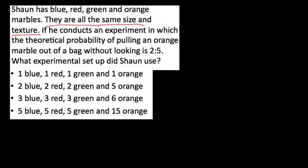If he conducts an experiment in which the theoretical probability of pulling an orange marble out of a bag without looking is 2 to 5, what experimental setup did Sean use? I don't like this question, first of all, because they're not so clear about 2 to 5. Does that mean there are 7 marbles in the bag and 2 of them are orange? I'm not so sure about that right there, but we can still answer this question, I think.